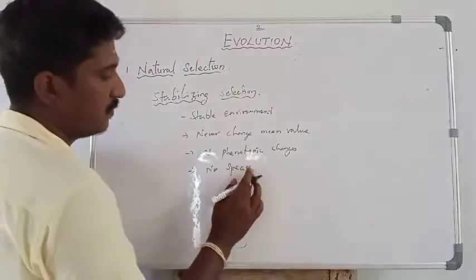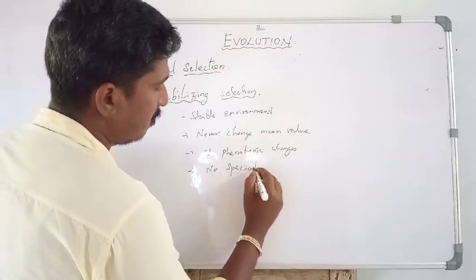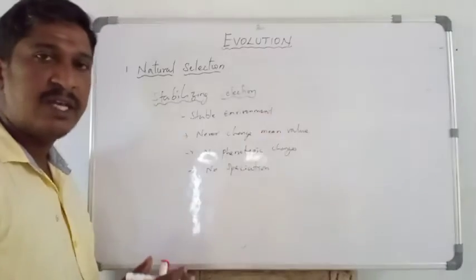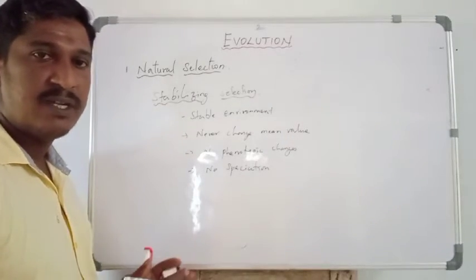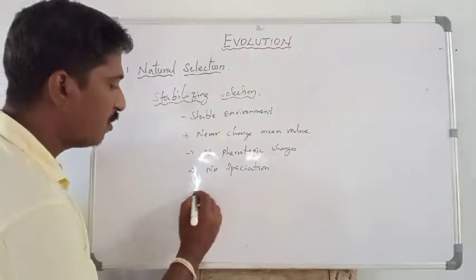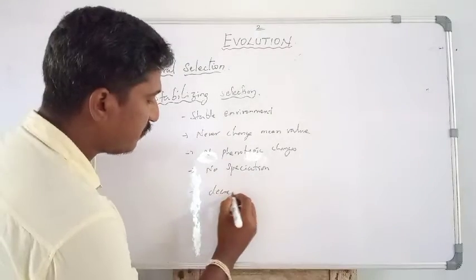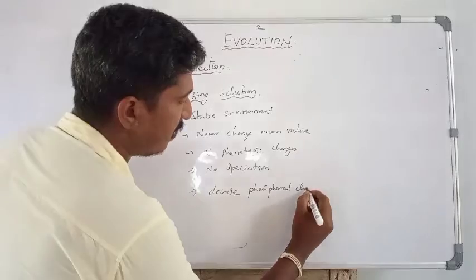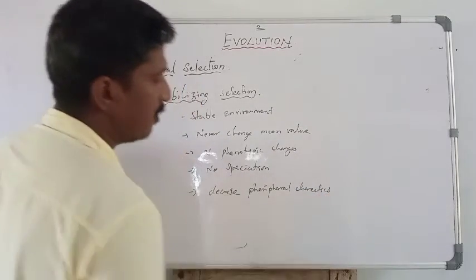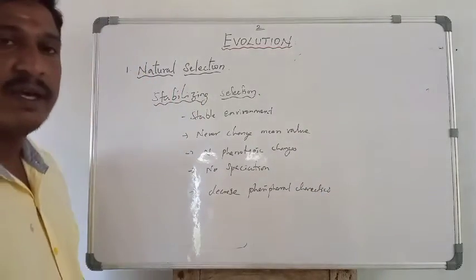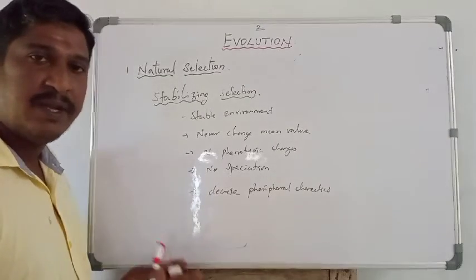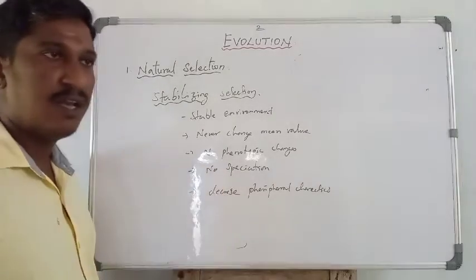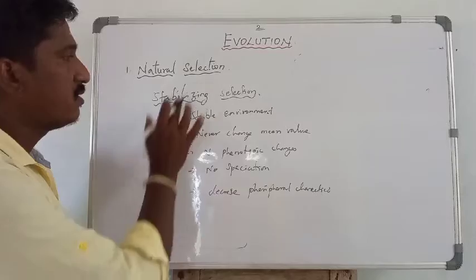In stabilizing selection, the average phenotypic population is increased and it decreases peripheral characteristics. The mean population — the average phenotypic population — is increased and always stable. So it is called stabilizing selection.